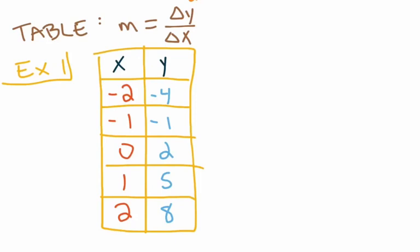If you wanted to, you could go to a coordinate grid, plot those five points, draw a straight line through them, and use rise over run to find the rate of change. Or you could use the formula from yesterday — y2 minus y1 over x2 minus x1 — choosing any two of those five ordered pairs. This is just another way of representing the graph of a line. In my opinion, this method of finding rate of change is the easiest of the four we're going to learn. We need to find the change from one x value and one y value to the next.